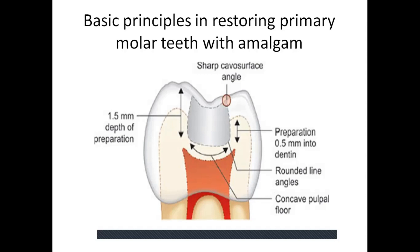The rounded line angles decrease the internal stresses in the restorative material and help prevent breakage. The occlusal preparation extends into susceptible pits and fissures. The buccal and lingual extensions of the class 2 preparation minimally break the contact. The buccal and gingival walls generally converge toward the gingival seat. The gingival seat contact is broken. And the isthmus width is one-third that of the intercuspal dimension. These are some points which you need to remember.